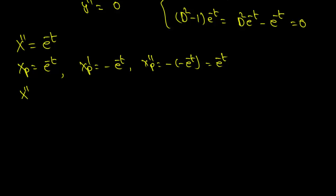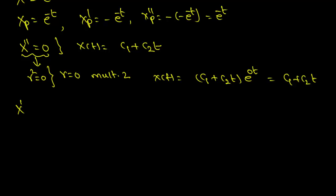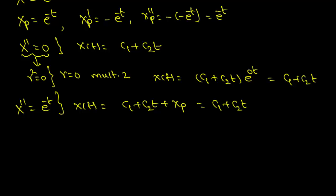The general solution of x'' = 0 is x(t) = c1 + c2·t, because the characteristic equation r² = 0 has only one root r = 0 with multiplicity 2. Therefore x'' = e^(−t) has solution x(t) = c1 + c2·t + xp = c1 + c2·t + e^(−t).